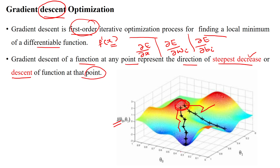When should the algorithm be stopped? It should stop when it is reaching close to zero. For example, if it reaches 0.2 at theta values theta_1 and theta_0, that is close to zero so we can stop. But if the value is 0.7, that is not close to zero, so we keep applying gradient descent until reaching close to zero.